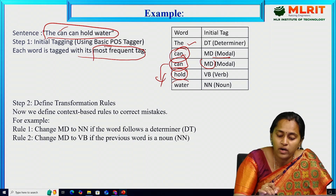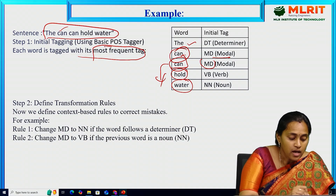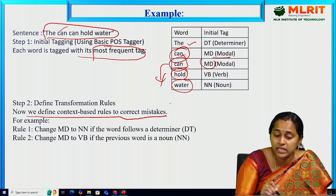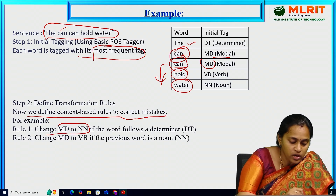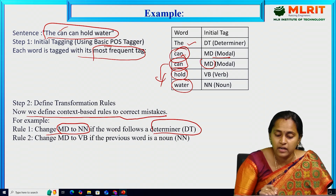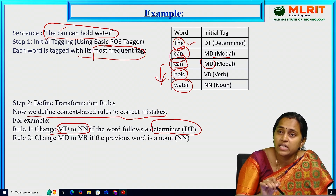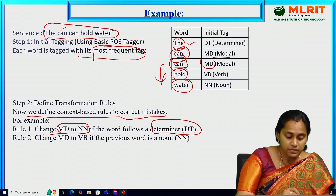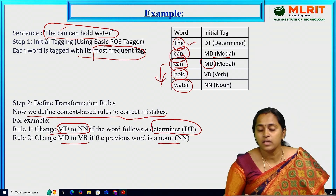'Hold' is a verb and 'water' is a noun. After applying the transformation rules, we can get the final sentence. We define context-based rules to correct the mistakes. The mistake is that the first 'can' should not be a modal — it is a noun phrase. Rule one: change MD (modal) to noun when followed by a determiner. 'The' is a determiner followed by a noun. After transformation, applying the transformation rules to the actual POS tagging: Rule two — change MD to verb when the previous word is a noun.